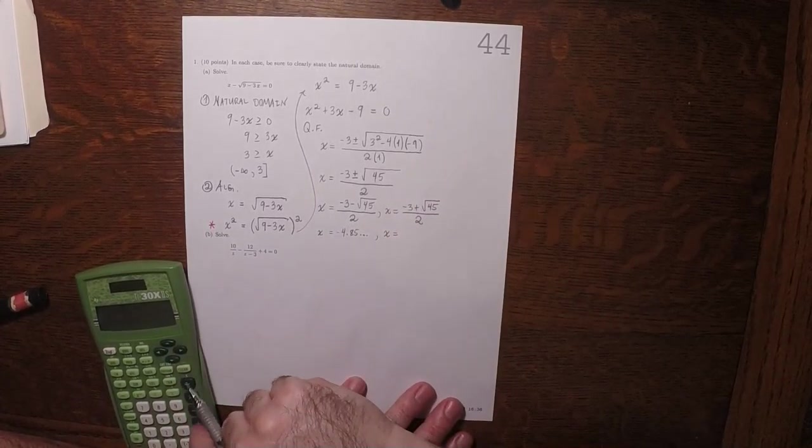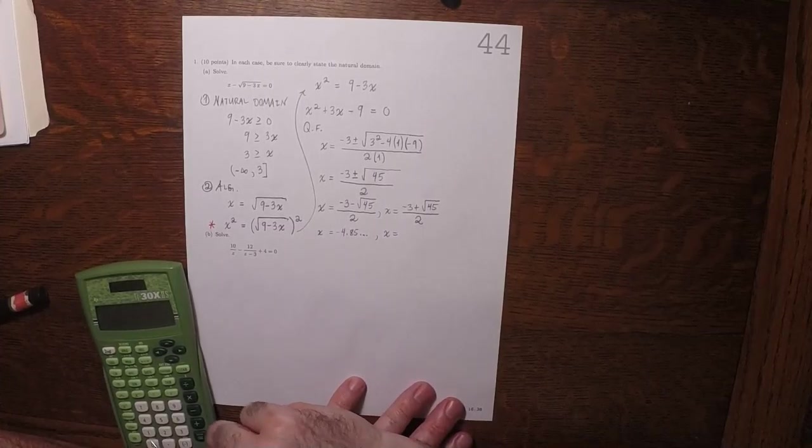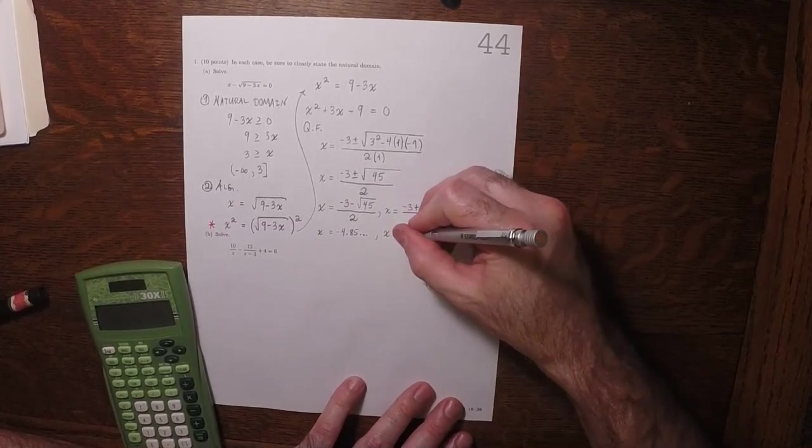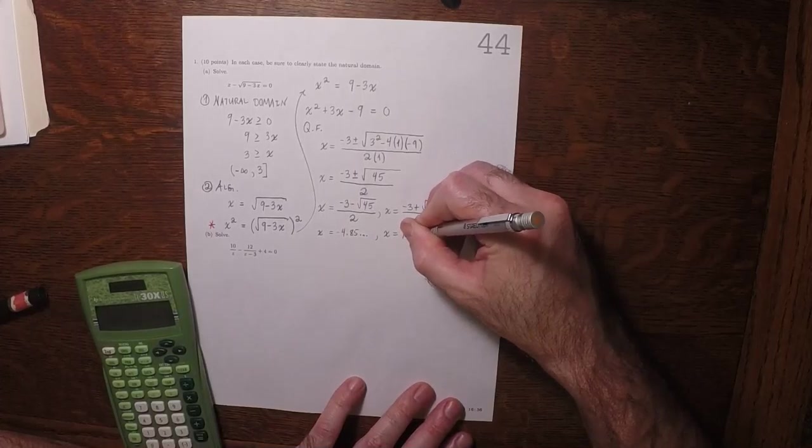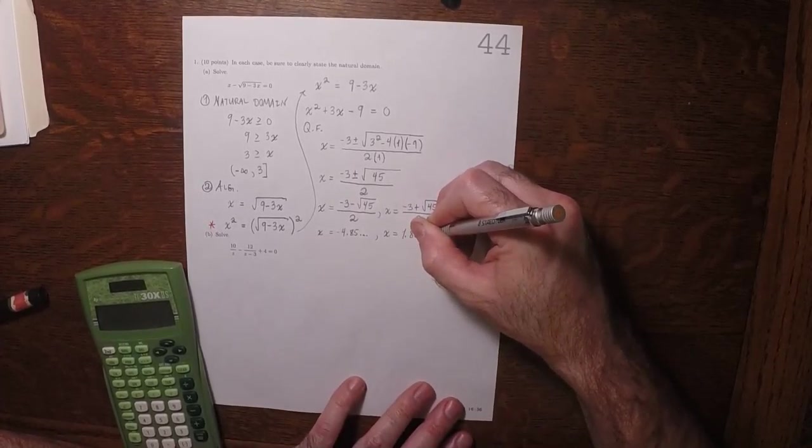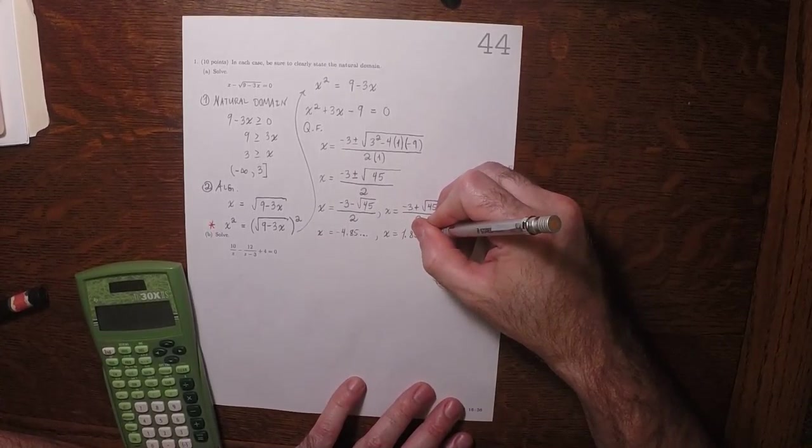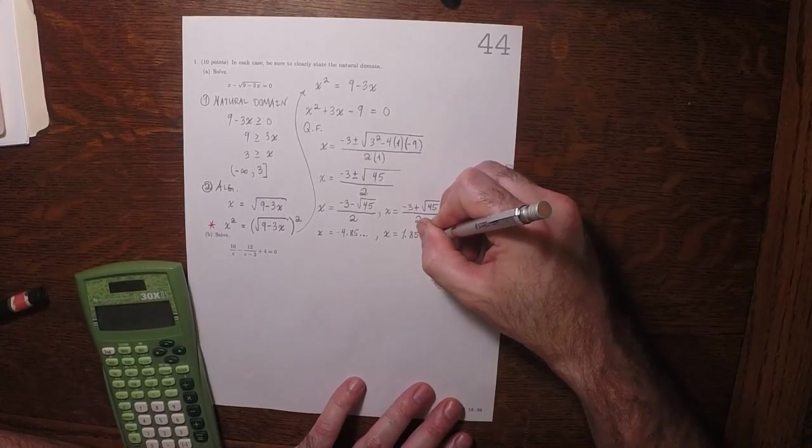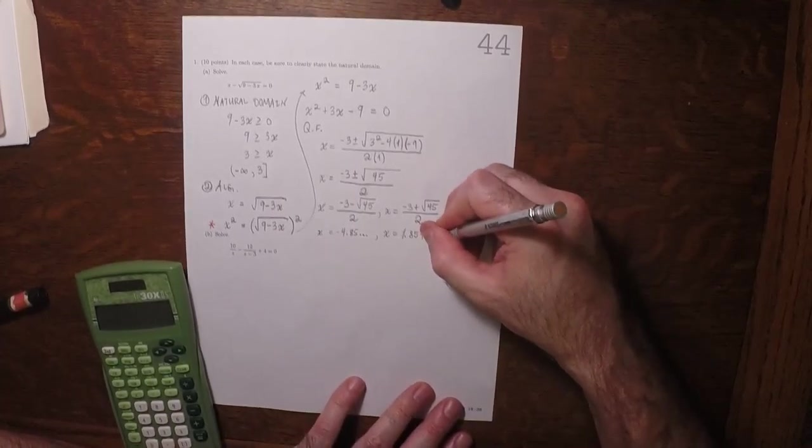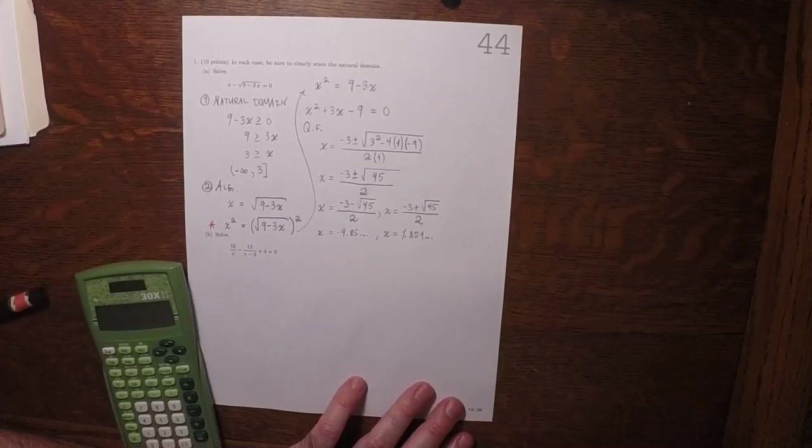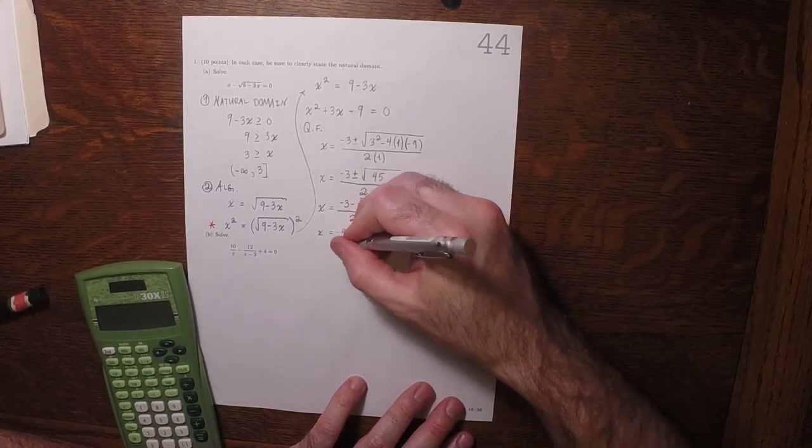And then plus. So this one starts out as 1.854. So that's good. Both of these are in the natural domain.